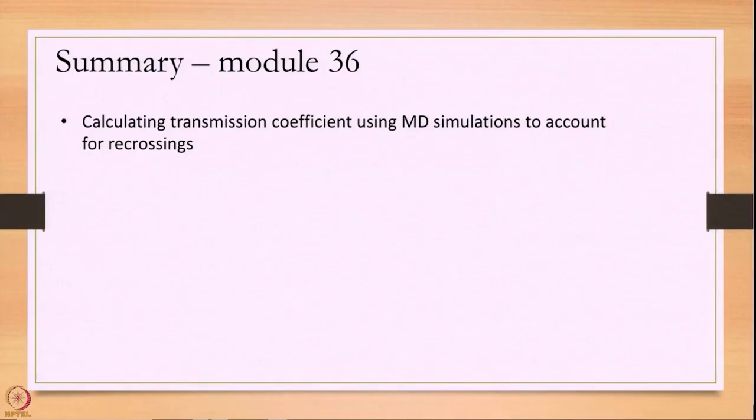In summary, today we have looked at how to calculate the transmission coefficient kappa using molecular dynamics to account for recrossings. This kappa will always be between 0 and 1. Thank you very much.